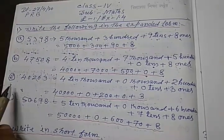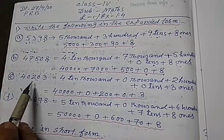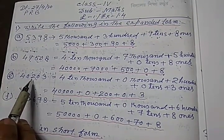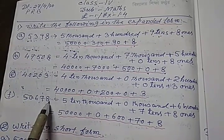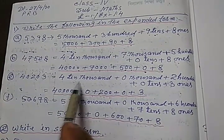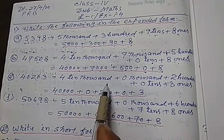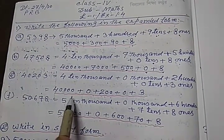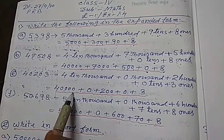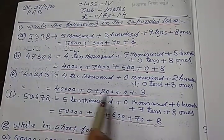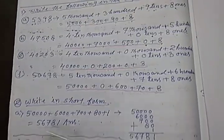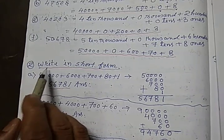Students, I think you will be able to expand these numbers: 40,203 and 50,678. First, write the numbers in words, then write the values of each digit as per their place value chart.